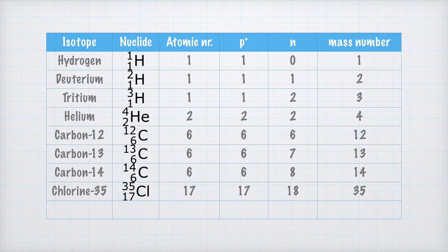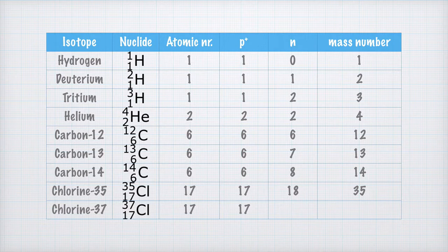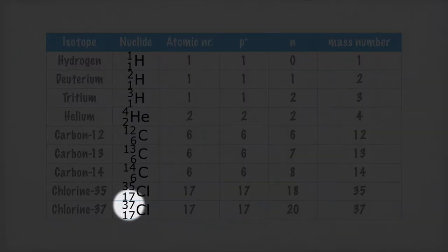Finally, we'll look at the isotope chlorine-37. The atomic number is still 17, just like the number of protons. The number of neutrons is 20, because 17 plus 20 equals 37, which is the mass number.